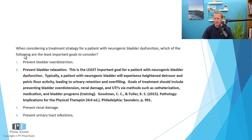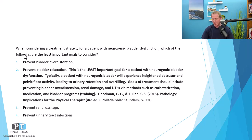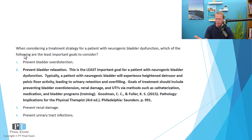So in this negatively worded question asking about the least important goal, preventing bladder relaxation is the least important — rather, you'd want to encourage bladder relaxation so the bladder is not overactive. Neurogenic bladder comes from upper motor neuron disorders; think of it like spasticity — it's just an overactive bladder. The best interventions for neurogenic bladder include timed voiding, pelvic floor relaxation, possible catheterization, and anticholinergics to reduce spasticity. That's the take-home point.